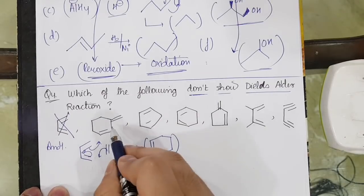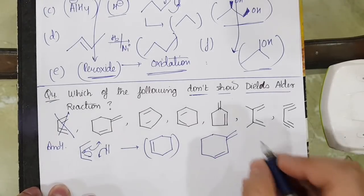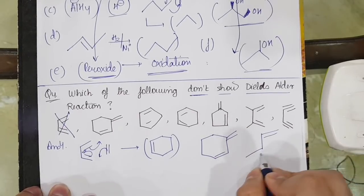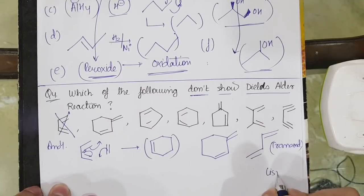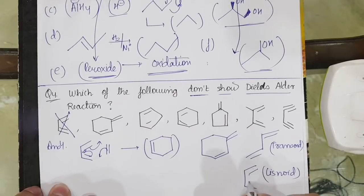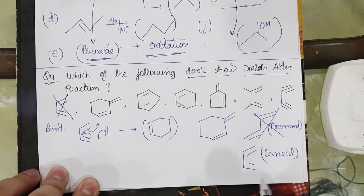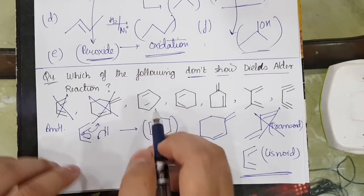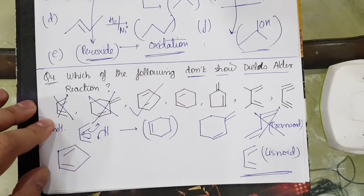Can this show the Diels-Alder reaction? No, Diels-Alder reaction cannot be shown by this because we should have the groups as transoid. Transoid nature. And if we have cisoid, cisoid means something like this which we have seen, this is cisoid, on the same side. Transoid, these do not show the Diels-Alder, whereas cisoid, these show the Diels-Alder reaction.